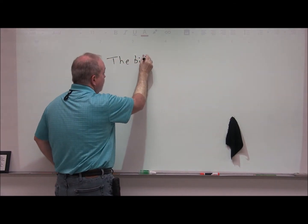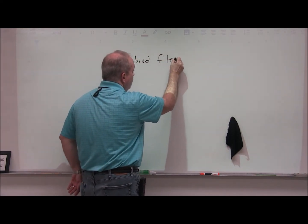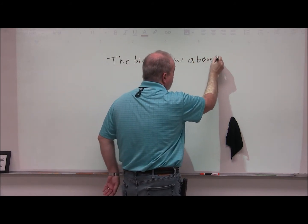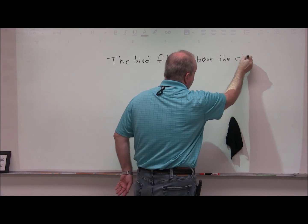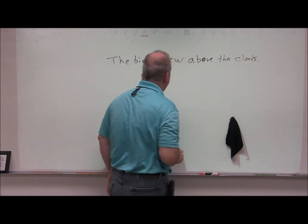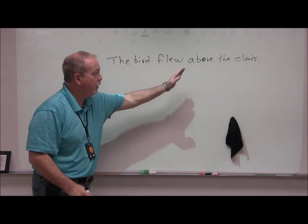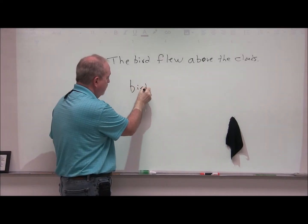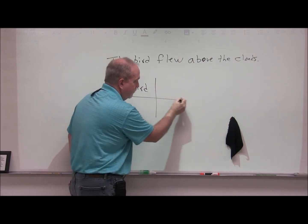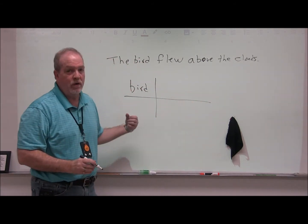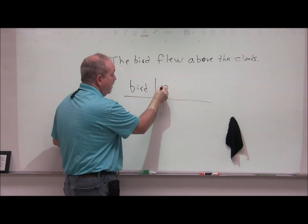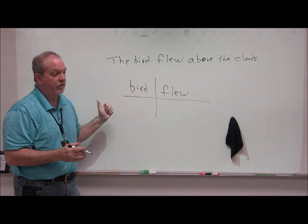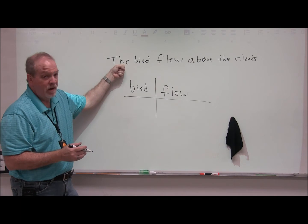The bird flew above the clouds. The bird flew above the clouds. What are we talking about? Bird. Draw your structure. What did the bird do? That's right. He flew. Back to the beginning of the sentence. What kind of bird? The bird.